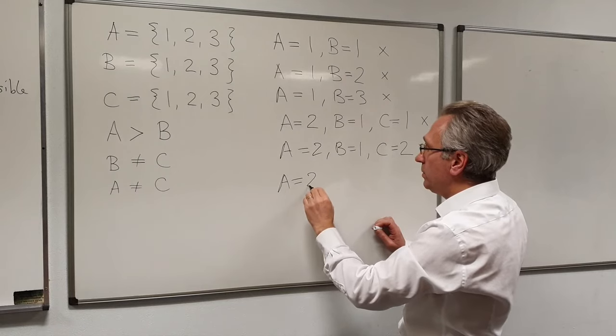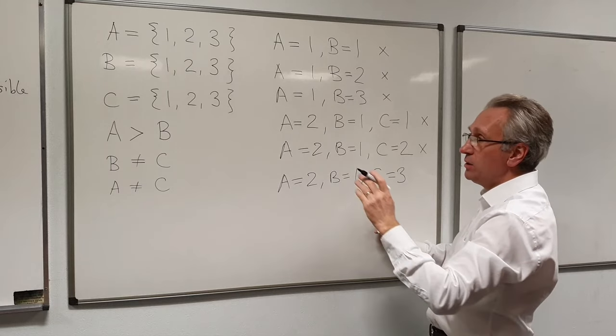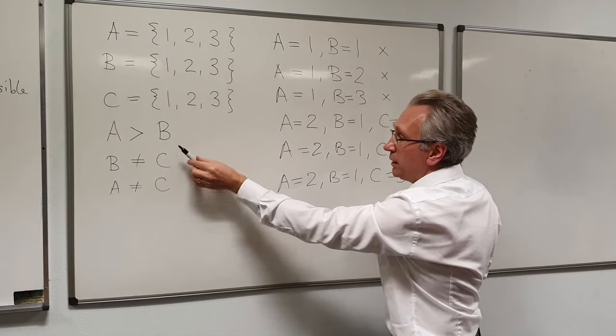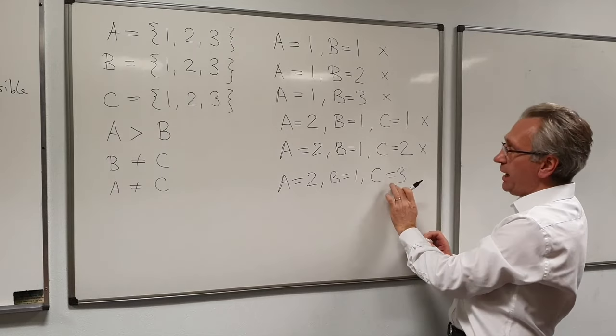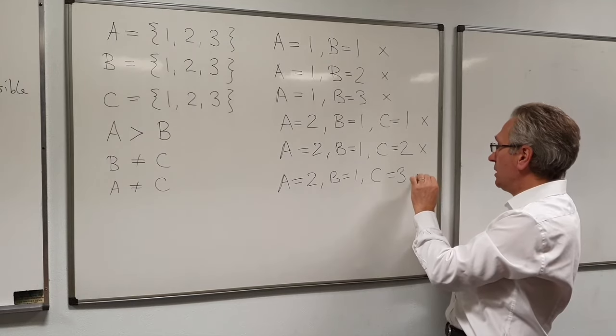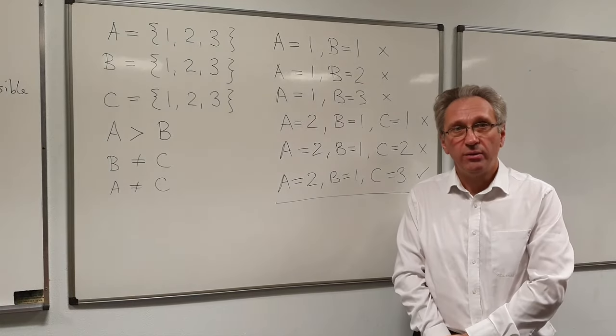A is equal to 2, B is equal to 1, C is equal to 3. Check the constraints. That's okay. That's okay. And now that's okay because A and C have different values. So that is the complete solution found by backtracking.